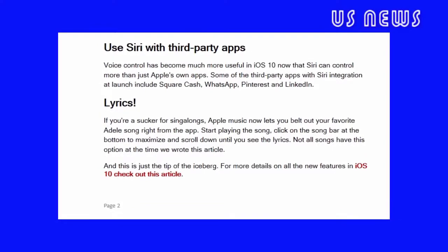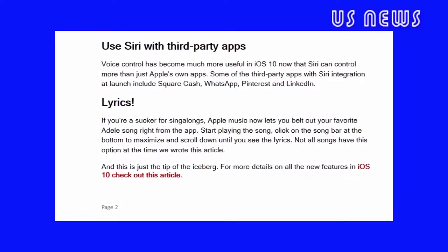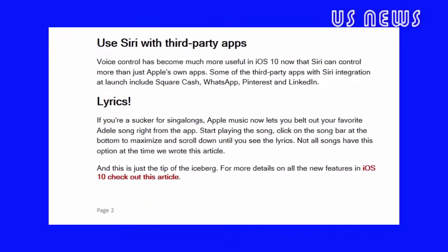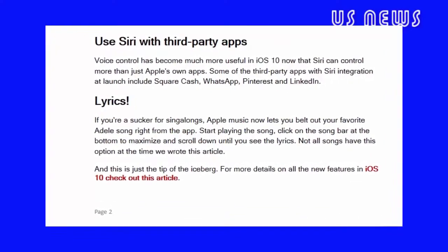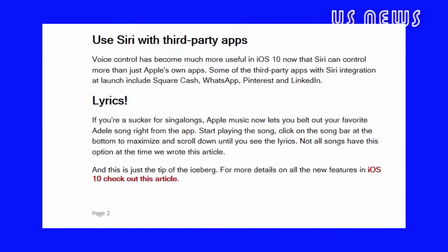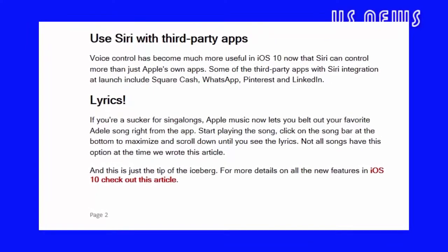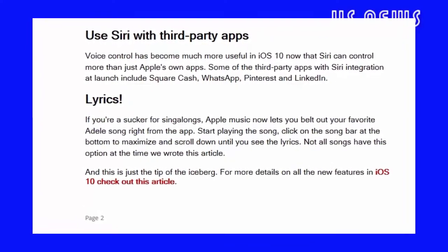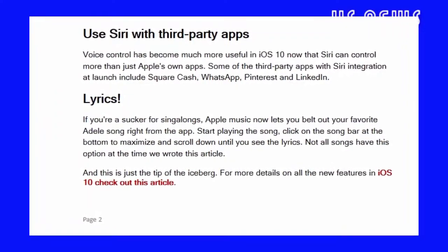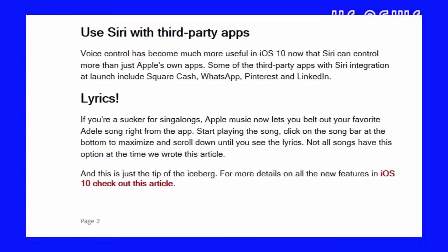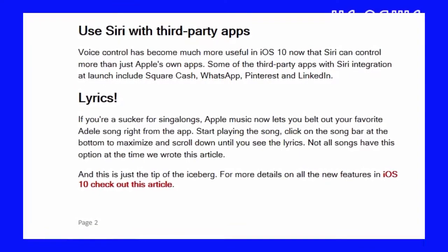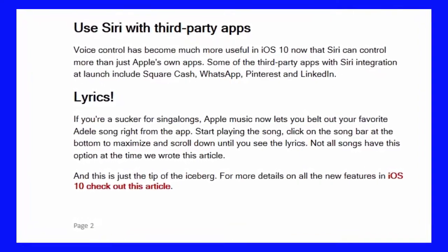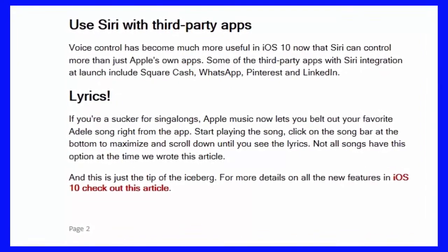Lyrics: if you're a sucker for singalongs, Apple Music now lets you belt out your favorite song right from the app. Start playing the song, click on the song bar at the bottom to maximize, and scroll down until you see the lyrics. Not all songs have this option at the time of writing.